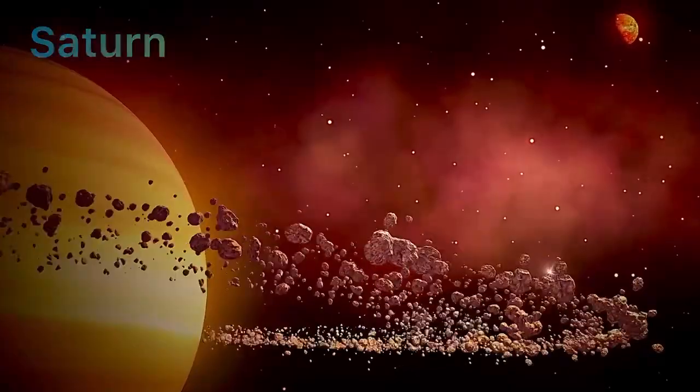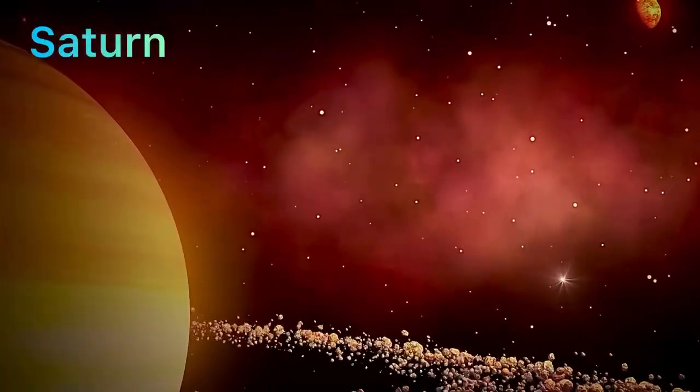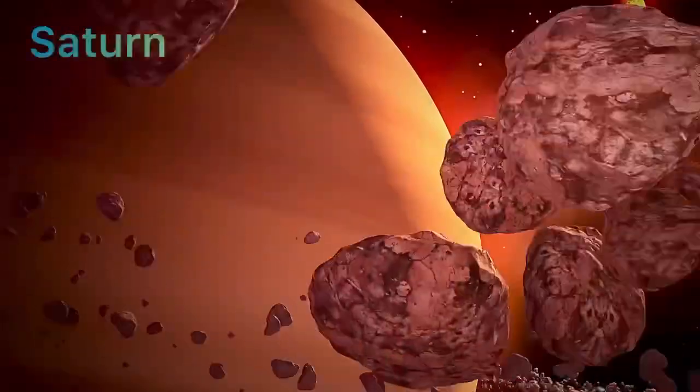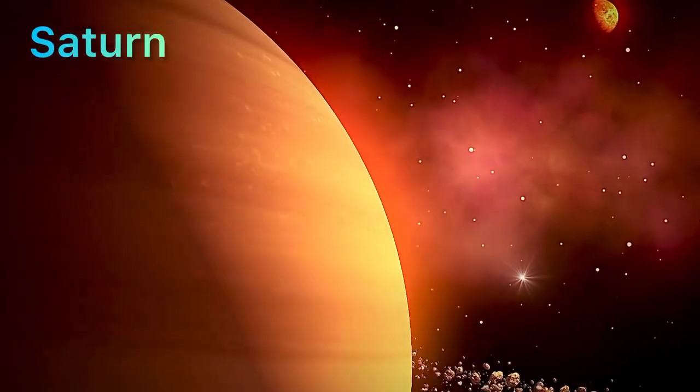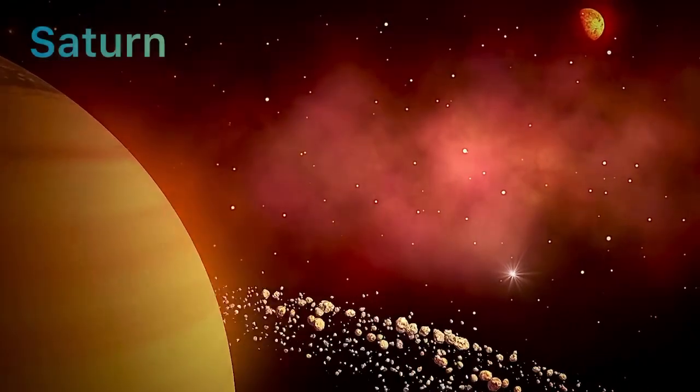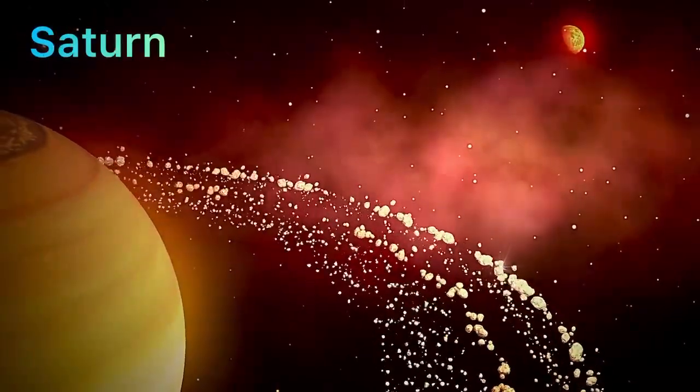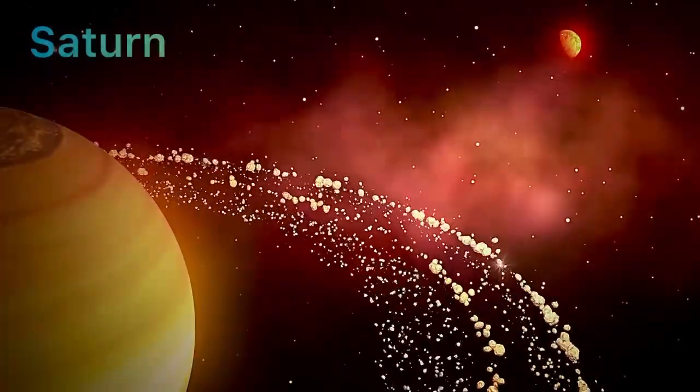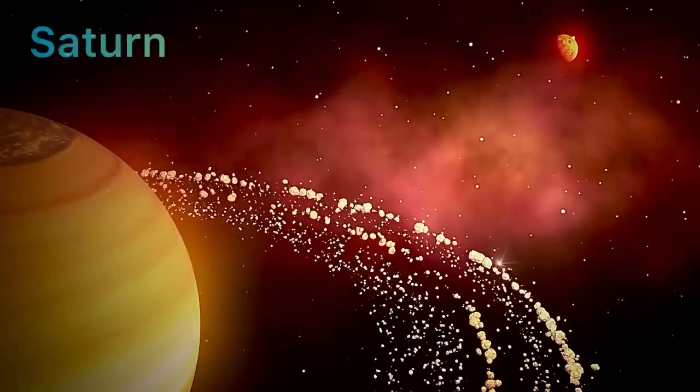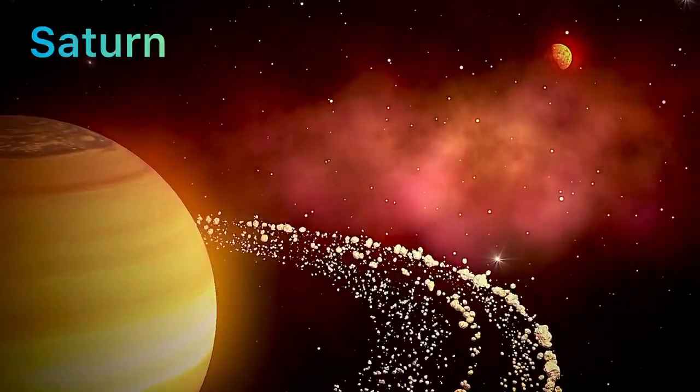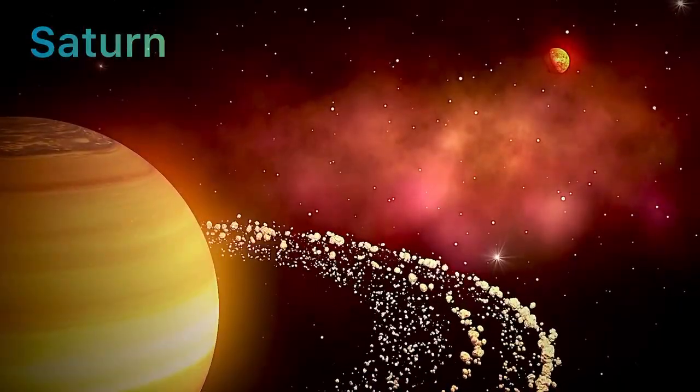Saturn's rings are its most amazing feature. They stretch over 2.8 lakh kilometers. That's more than 7 times around Earth. But guess what? The rings are actually super thin, only about 10 to 30 meters thick in most places.